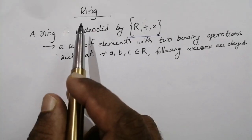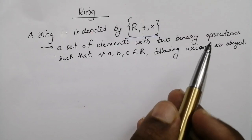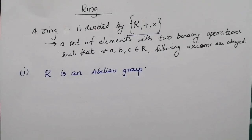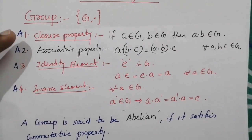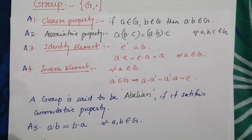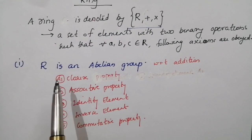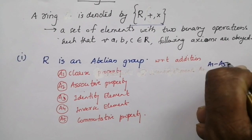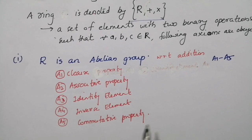Now we will look at the concept of rings. A ring is denoted by (R, +, ·) and is a set of elements with two binary operations such that for every a, b, c belonging to R, the following axioms are obeyed. First, R is an abelian group with respect to addition — that is, it should satisfy A1 to A5: closure property, associative property, existence of identity element, existence of inverse element, and commutative property.